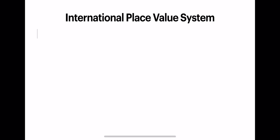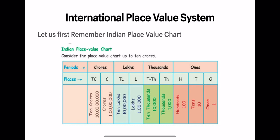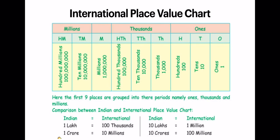Let us first remember the Indian place value chart, which has four periods for nine place values. The four periods are ones, thousands, lakhs, and crores. The first period — ones — has three place values: ones, tens, and hundreds. The second period — thousands — has two: thousands and ten thousands. The third period — lakhs — has two: lakhs and ten lakhs. The fourth period — crores — has two: crores and ten crores.